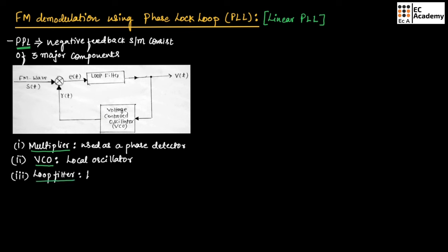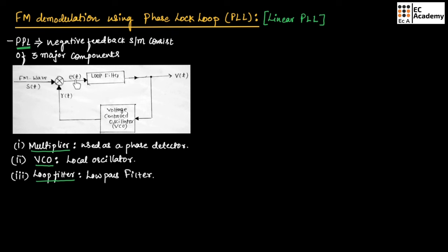This is the block diagram of phase lock loop, where the input is FM wave, which is represented as S of T. We have a signal R of T, which is the output of the voltage controlled oscillator. The multiplier multiplies these two signals to produce a signal which we call E of T, which is an error signal.